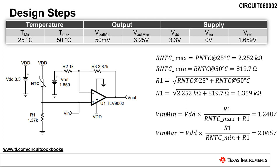Now that we know the input voltage divider resistances, the next step is to calculate the maximum and minimum input voltage range. The minimum input voltage is calculated using the NTC resistance at 25 degrees Celsius, and the maximum input voltage is calculated using the NTC resistance at 50 degrees Celsius. The minimum input voltage is 1.248 volts, and the maximum input voltage is 2.065 volts.